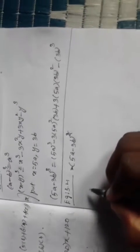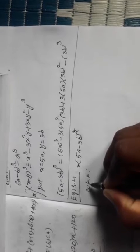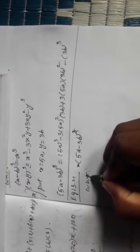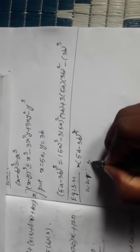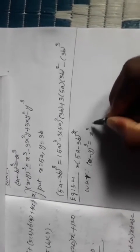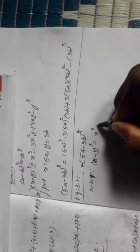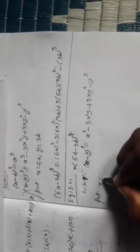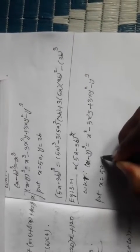(5a - 3b)³ is given; we want to expand it. We know that (x - y)³ = x³ - 3x²y + 3xy² - y³. Now put x = 5a and y = 3b and substitute.